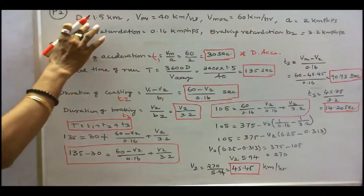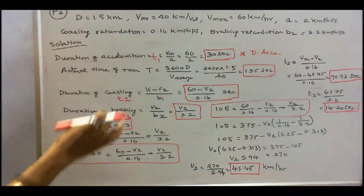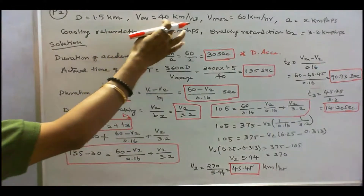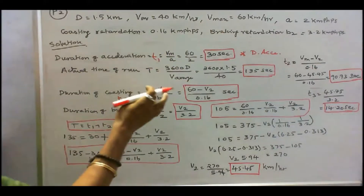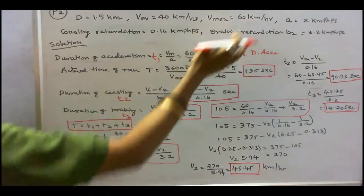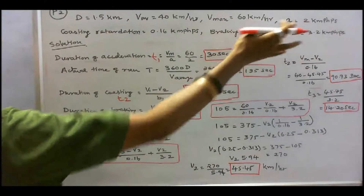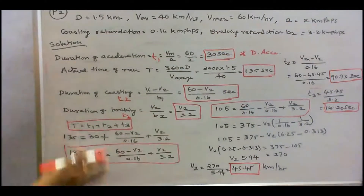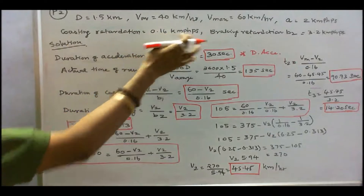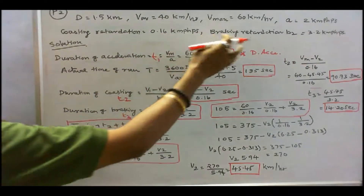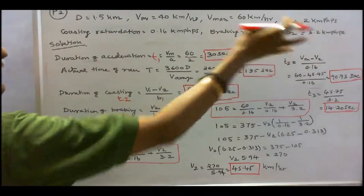Given: D = 1.5 km, average speed = 40 km/h, maximum speed V1 = 60 km/h, acceleration = 2 km/h/s, coasting retardation = 0.16 km/h/s, and braking retardation B2 = 3.2 km/h/s.